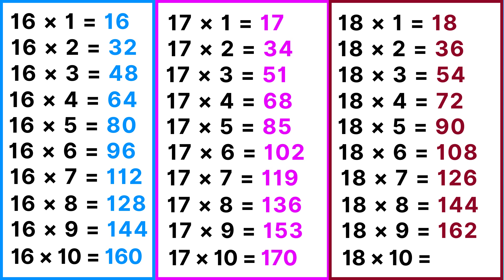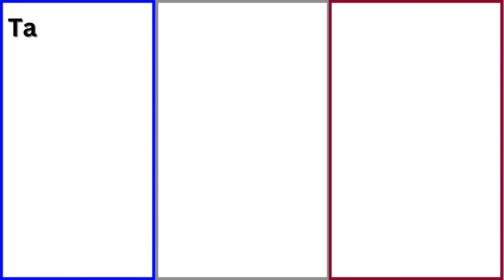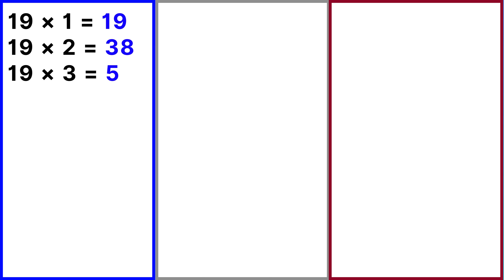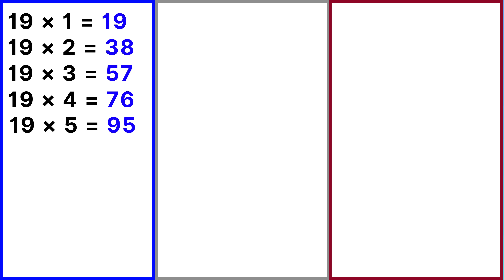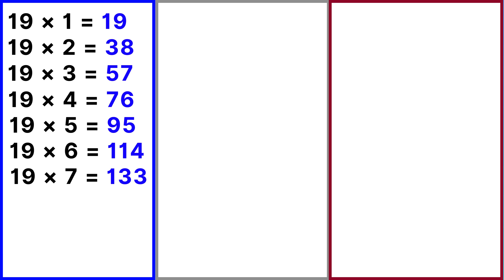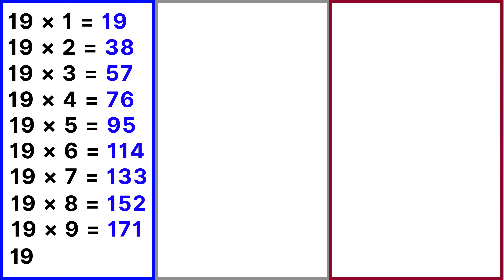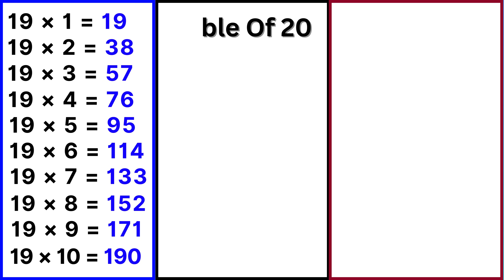18 tens are 180. Table of 19: 19 ones are 19, 19 twos are 38, 19 threes are 57, 19 fours are 76, 19 fives are 95, 19 sixes are 114, 19 sevens are 133, 19 eights are 152, 19 nines are 171, 19 tens are 190.